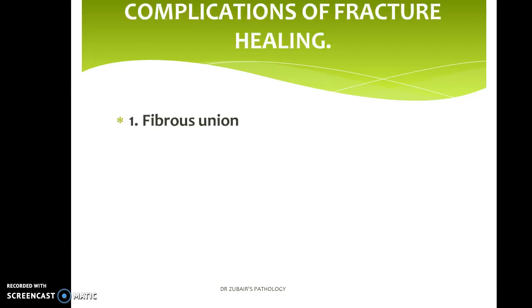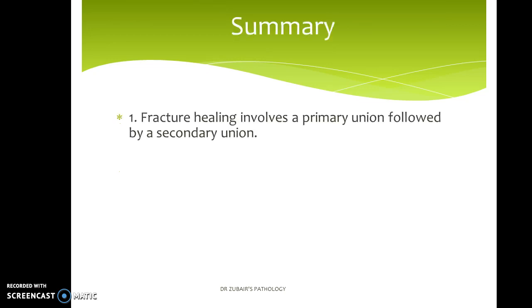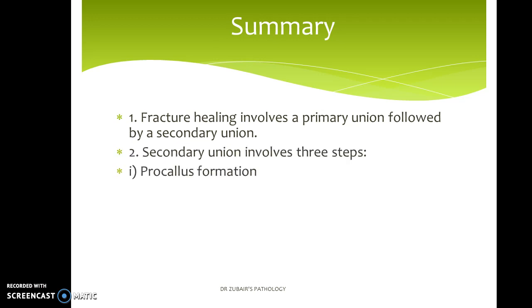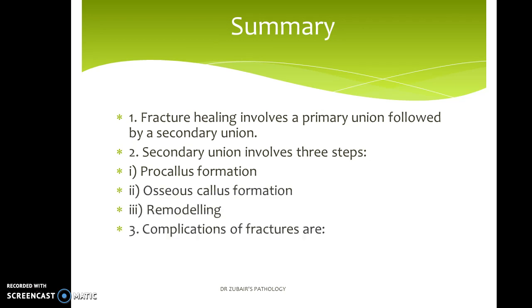Complications of fracture healing include fibrous union — if the patient does not immobilize the limb, then instead of proper bony union, there will just be a fibrous union. Or there could be non-union, where the ends of the fracture will not unite at all. Or there could be delayed union, where union takes longer than the expected time. To summarize, fracture healing involves primary union followed by secondary union. Secondary union involves three steps: procallus formation, osseous callus formation, and remodeling.